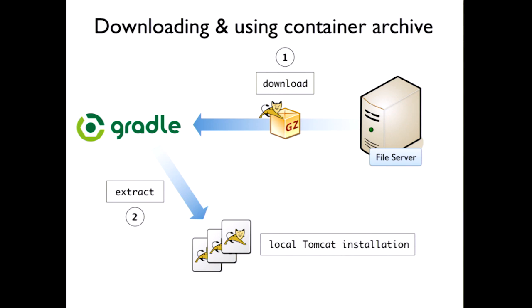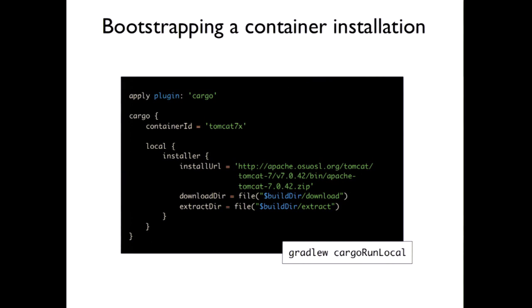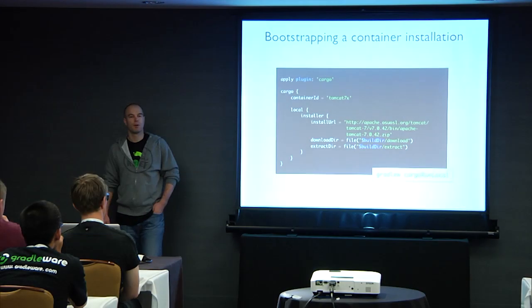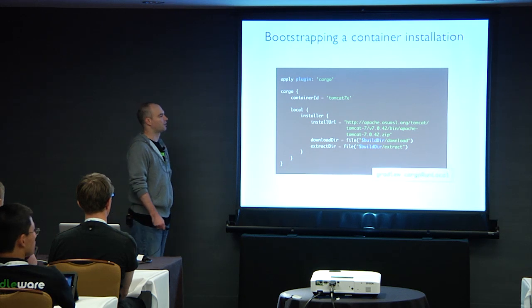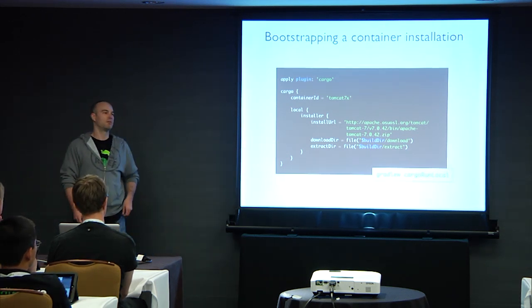If you don't want to install Tomcat yourself, the Cargo plugin supports an 'installer' block — similar to the Gradle wrapper concept. You point it to the URL of the distribution zip file, specify a download directory and an extraction directory, and the plugin handles the rest: downloading, extracting, and running from there.